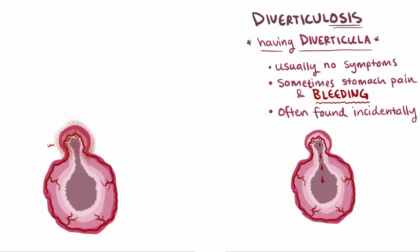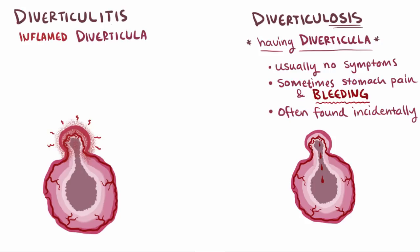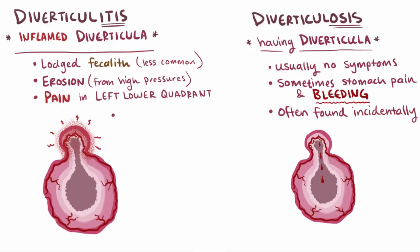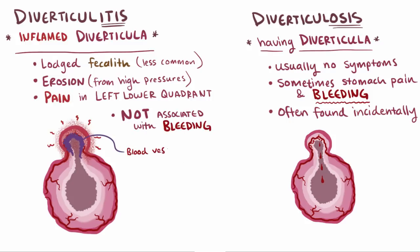Sometimes the diverticula can become inflamed, and this is known as diverticulitis — "itis" meaning inflammation. Although inflammation can happen when fecal matter or fecoliths become lodged in the diverticula, this is thought to actually be less common. Inflammation is thought to happen more often due to erosion of the diverticular wall from higher luminal pressures. Erosion and inflammation most commonly causes pain in the left lower quadrant. Diverticulitis is usually not associated with hematochesia or rectal bleeding, since the blood vessels become scarred from inflammation, and therefore rectal bleeding is more associated with diverticulosis.